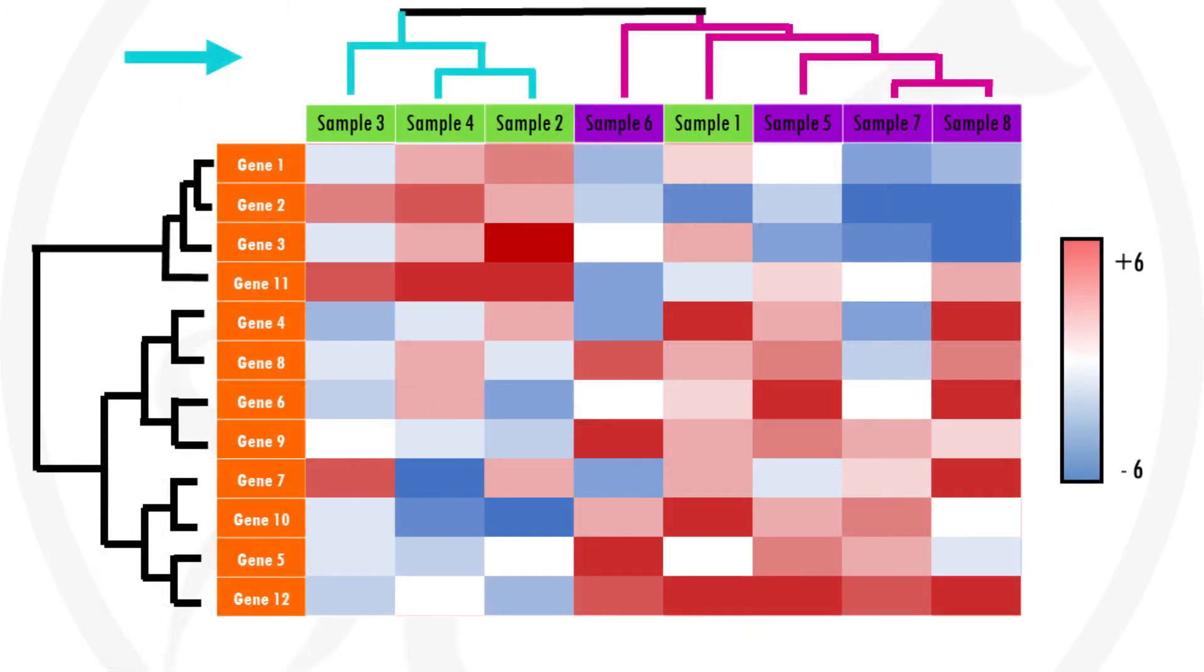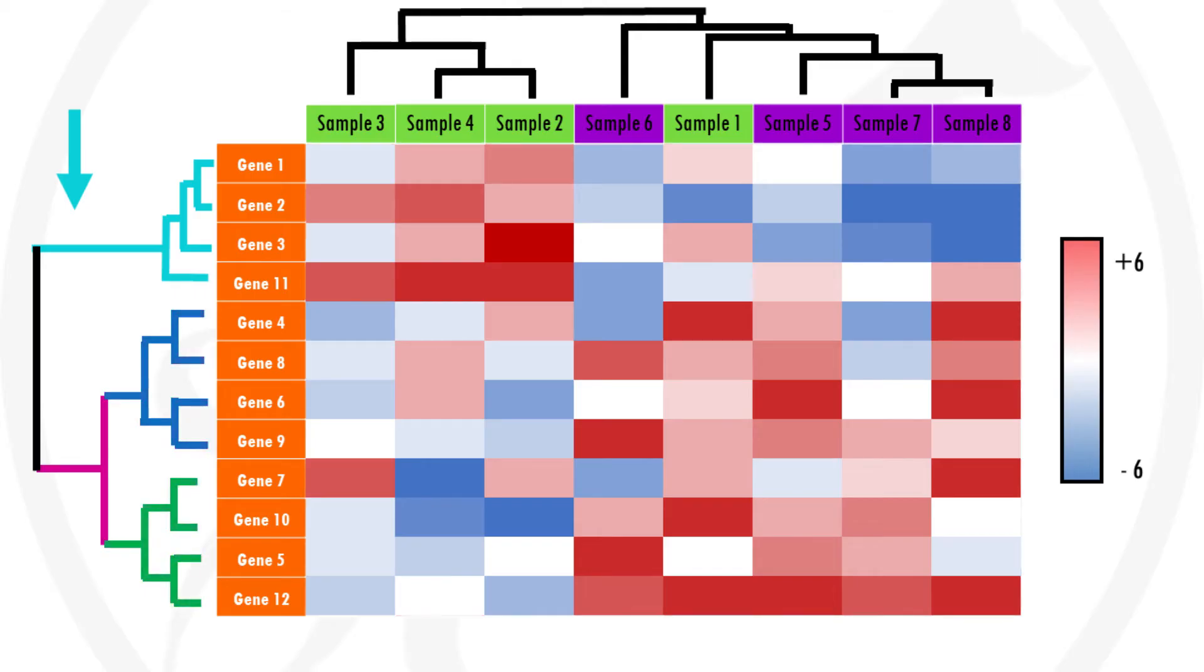In this clustered heatmap we see all samples were clustered together in two big groups. The genes were also clustered together in two big groups. But we can go further down the branches and identify three gene sets for example.